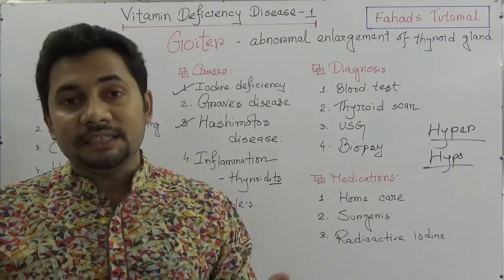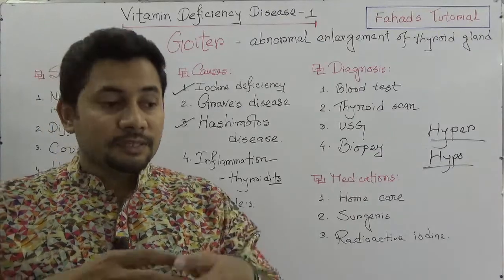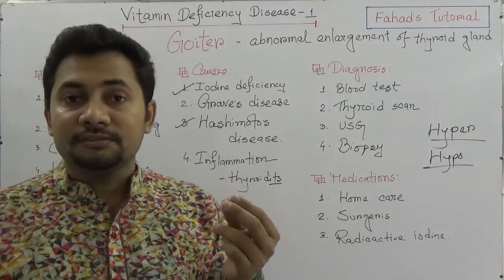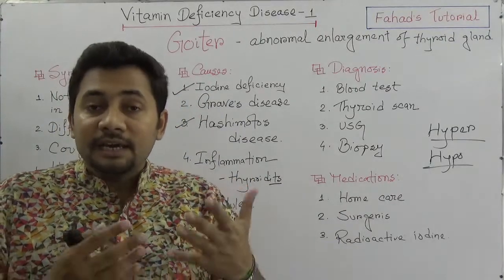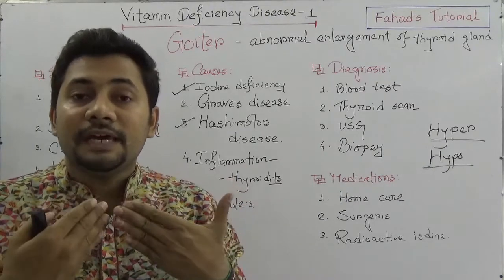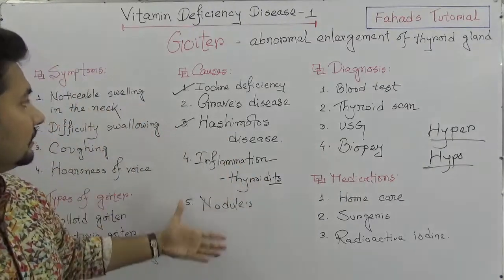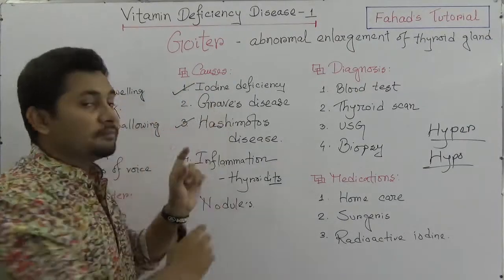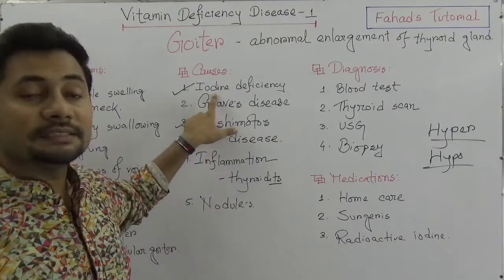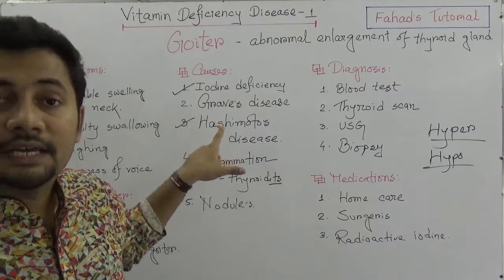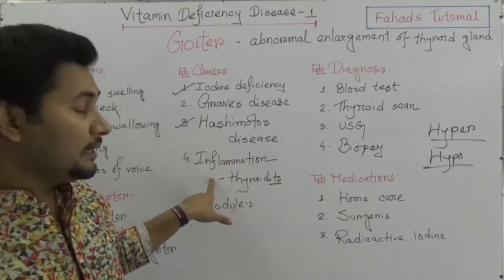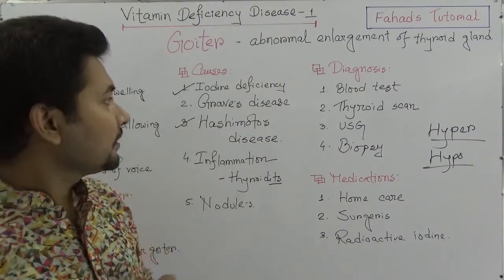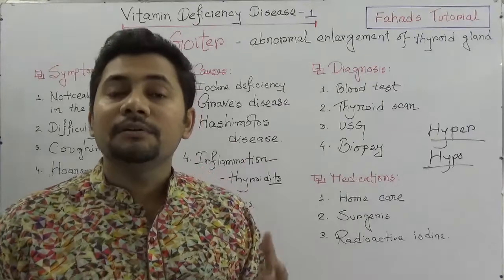In our daily life, when we cook food, salt should be mixed in, and that salt should contain iodine. That iodine helps the thyroid gland to function properly. The key causes of goiter are: iodine deficiency, Graves' disease, Hashimoto's disease, inflammation such as viral thyroiditis, and nodules.